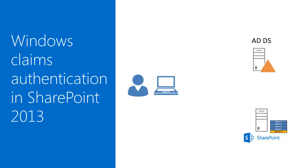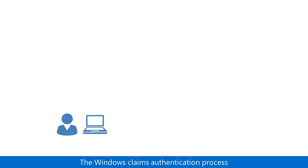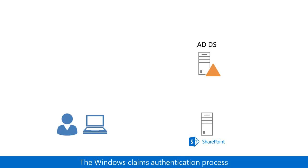Let's step through the Windows Claims Authentication process for SharePoint 2013. Windows Claims Authentication is an interaction between a client computer, a SharePoint server, and an Active Directory Domain Services, or ADDS, domain controller.